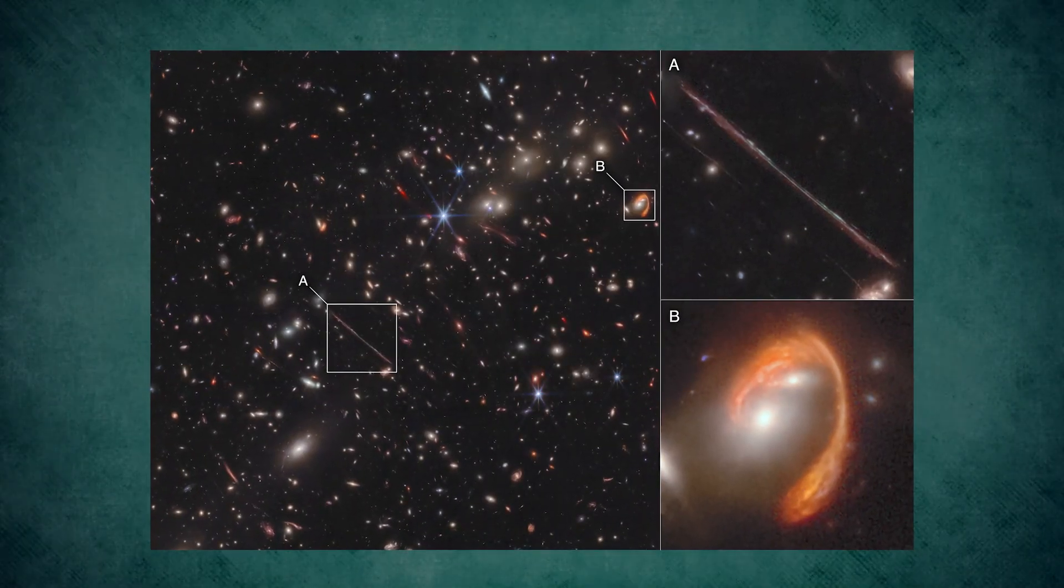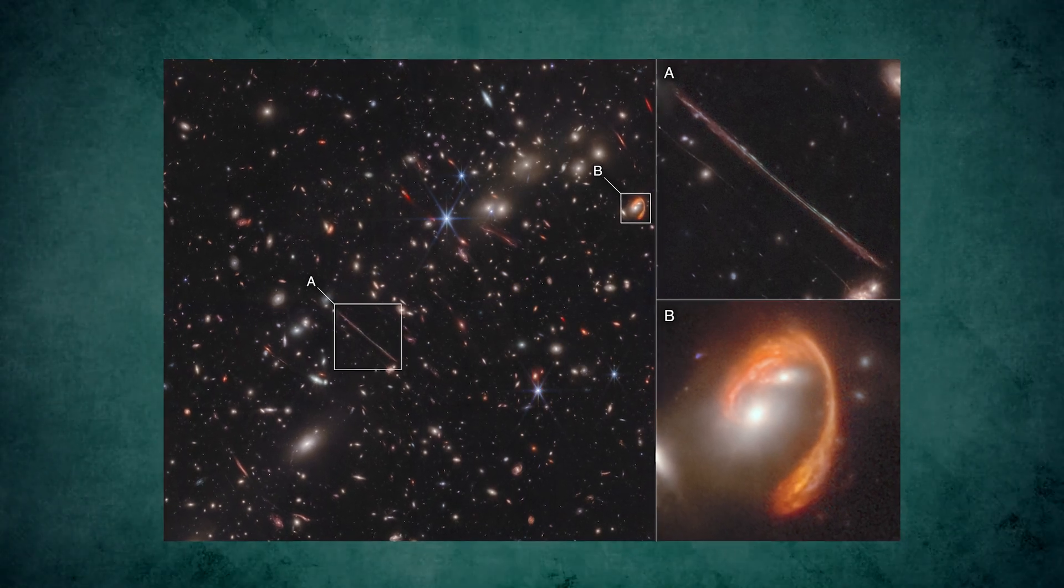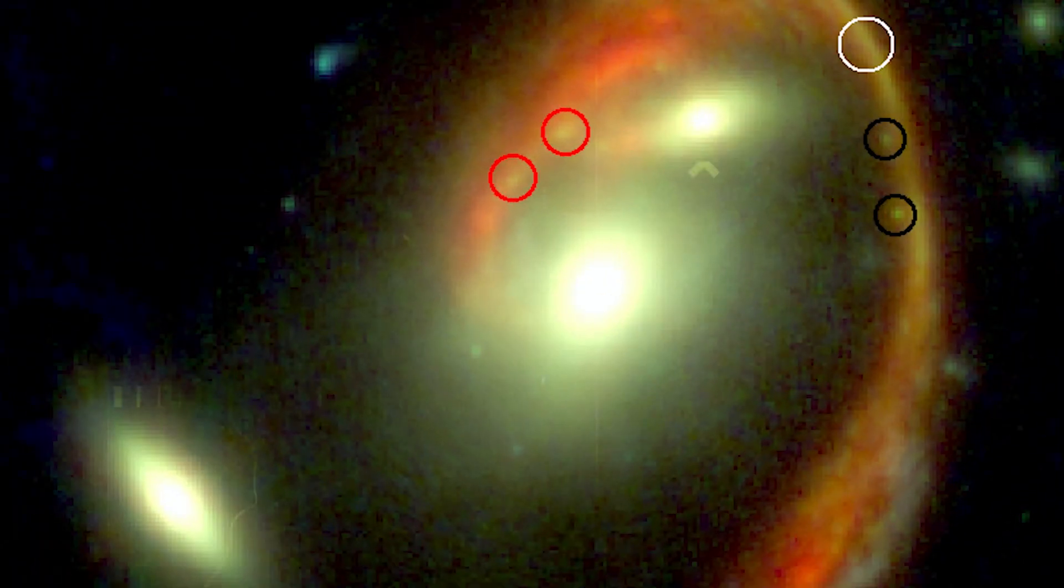First things first, its striking color. You might be wondering why it's redder than a Martian sunset. Well, it's a cosmic combo. Part of that redness is due to the galaxy itself. It's filled with cosmic dust, a sort of galactic fog that tinges its light with a ruby glow.